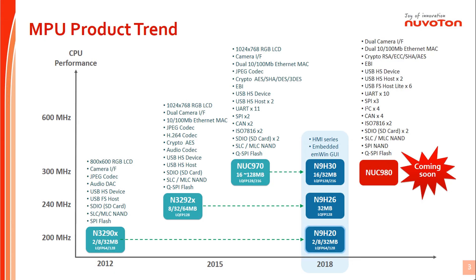This is the Nuvoton NPU product line roadmap. From this product trend, we know that Nuvoton N9H solutions include N9H30, N9H26, and N9H20 series solutions as highlighted. The N9H series are major for HMI application. They provide the emWin graphics and video accelerator for HMI platform. The series let the HMI platform LCD display have good GUI quality and good performance.